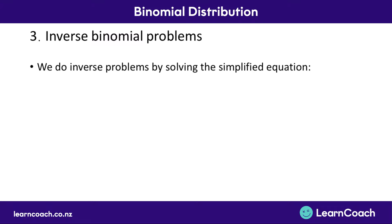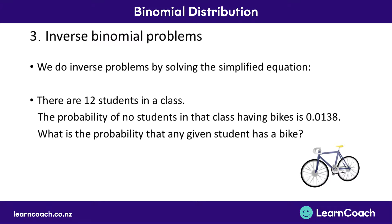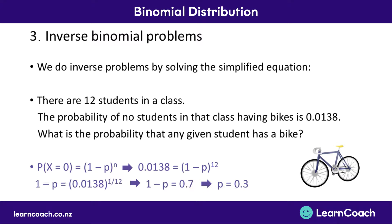Let's look at actually doing an inverse problem. Say there are 12 students in a class. The probability of no students in that class having bikes is 0.0138. What's the probability that any given student has a bike? The simplified formula is: probability of x being 0 equals (1 minus p) to the power of n. We put in n equals 12 and the probability of 0.0138, giving us 0.0138 equals (1 minus p) to the power of 12. Taking both sides to the power of 1/12 gives 1 minus p equals 0.7, so p equals 0.3. The probability of any given student having a bike is 0.3.